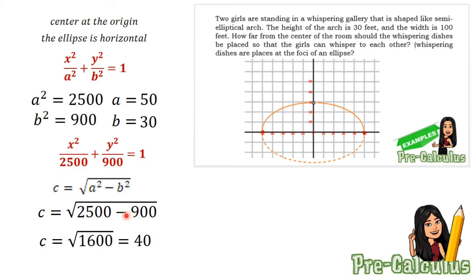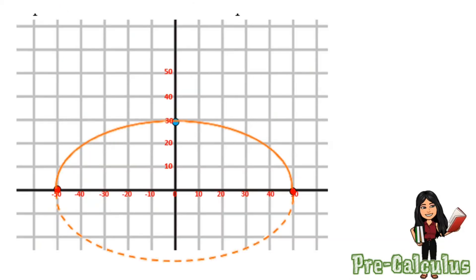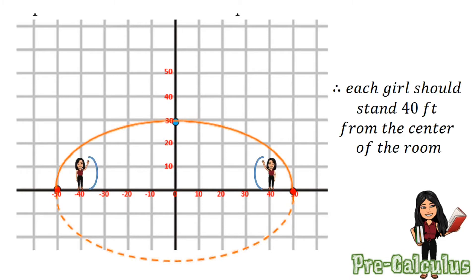We will be having the answer of 40. Since c = 40, therefore each girl should stand 40 feet from the center of the room for them to whisper to each other. Don't forget the units — units are very important when it comes to word problems. So our final answer will be 40 feet. That is our example number one.